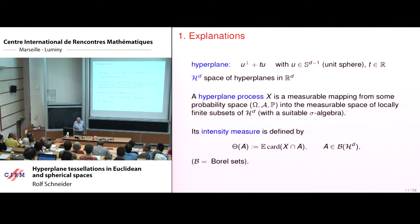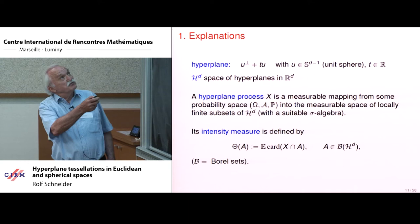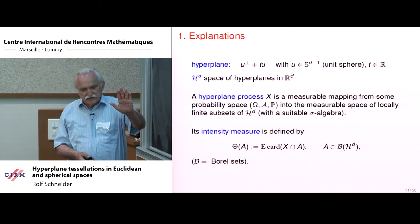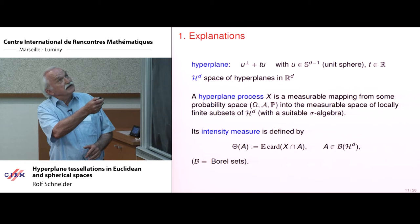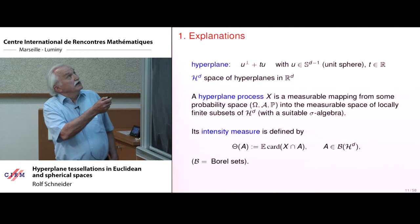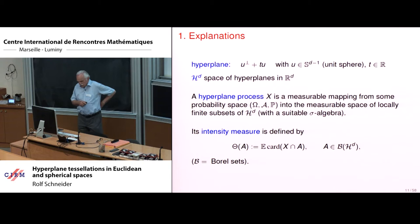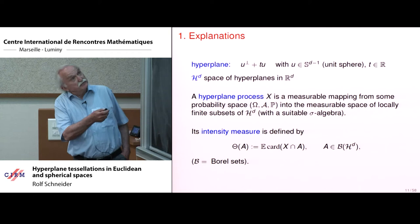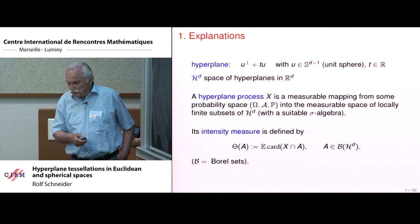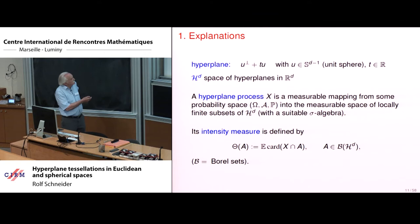The necessary explanations begin with hyperplanes, which I prefer to represent by a unit normal vector. So u-perp is the orthogonal hyperplane through the origin, and this is translated in the direction of u by parameter t. We can represent every hyperplane with a unit vector on the unit sphere and a real number t. The space of hyperplanes is denoted script H_d, equipped with the usual topology. I consider point processes in the space of hyperplanes — only simple point processes. A hyperplane process X is a measurable mapping from some probability space into the measurable space of locally finite subsets of the space of hyperplanes with a suitable sigma algebra.